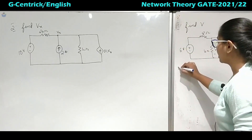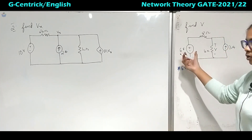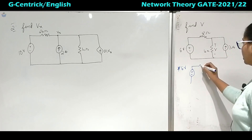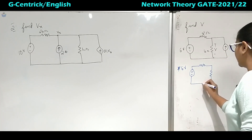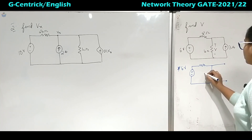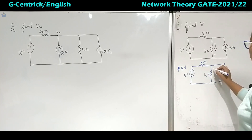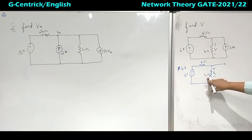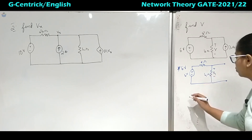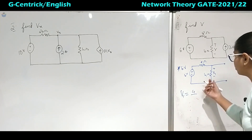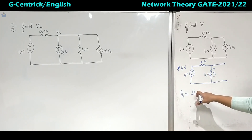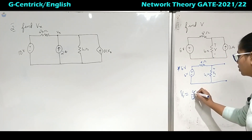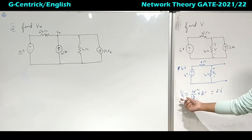First I will keep 6 volts as active. When 6 volts is active, the 3 ampere current source becomes open circuit. So the circuit has 4 ohms and 8 ohms with 6 volts. We have to find V1. Applying the voltage division rule, V1 equals 4 divided by (4 plus 8) into 6, which gives 2 volts.